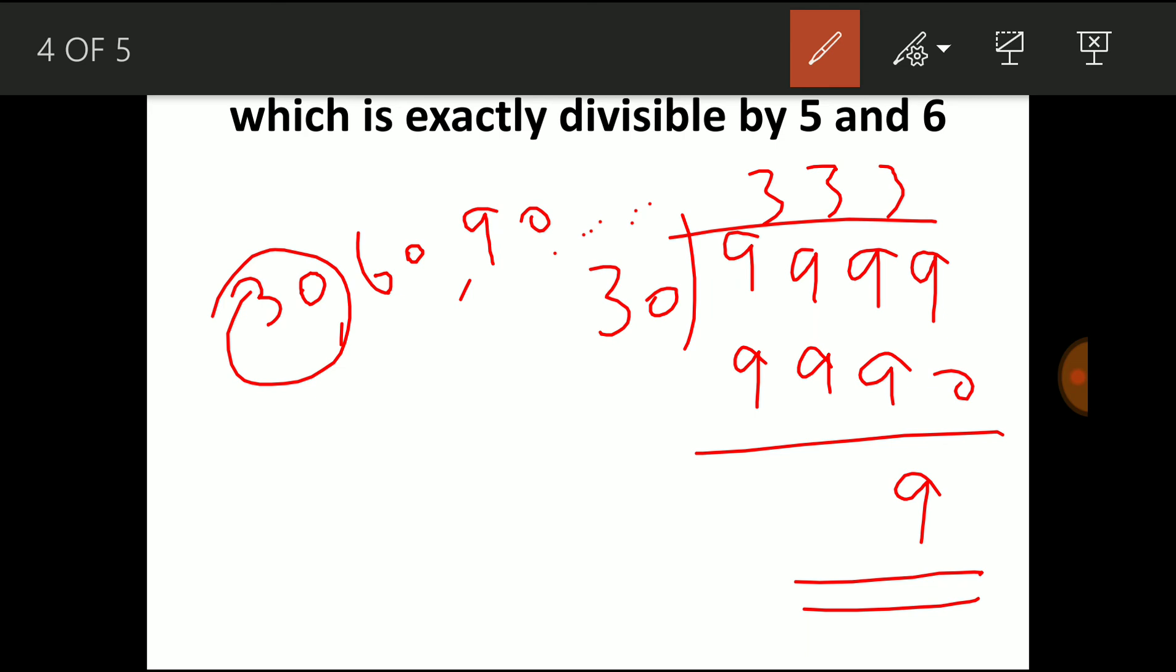Now if a number needs to be perfectly divisible by 30 then it should not give any remainder. So subtract this remainder from the number which you are dividing. So 9999 minus 9, the answer is 9990. So 9990 is the number which is perfectly divisible by 30.